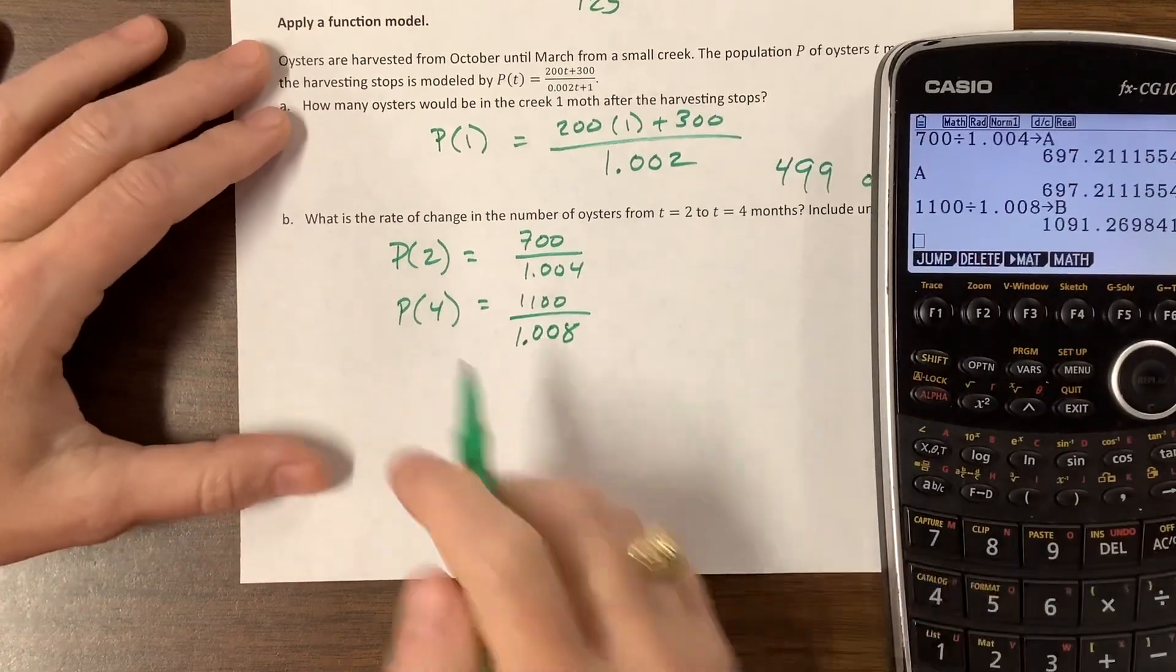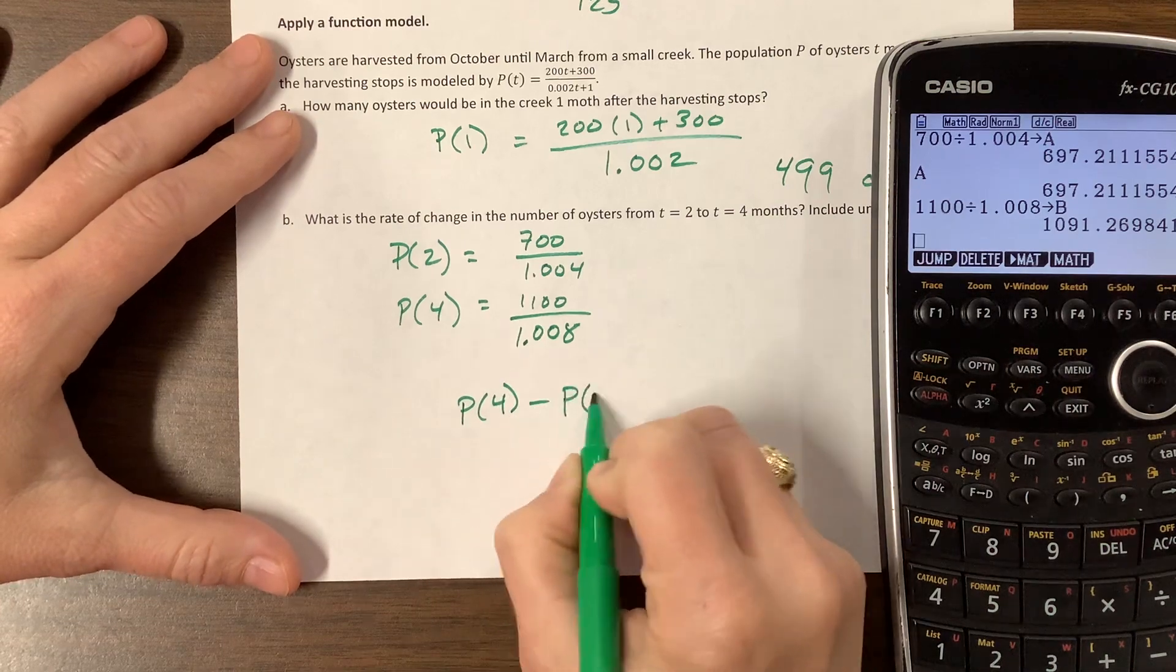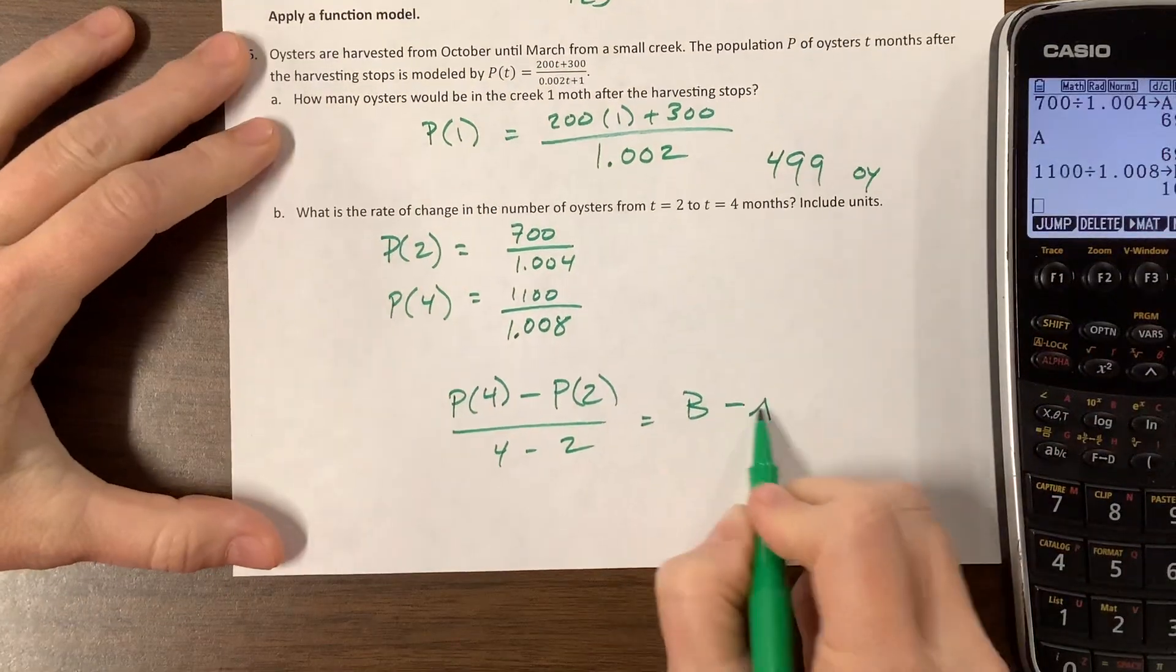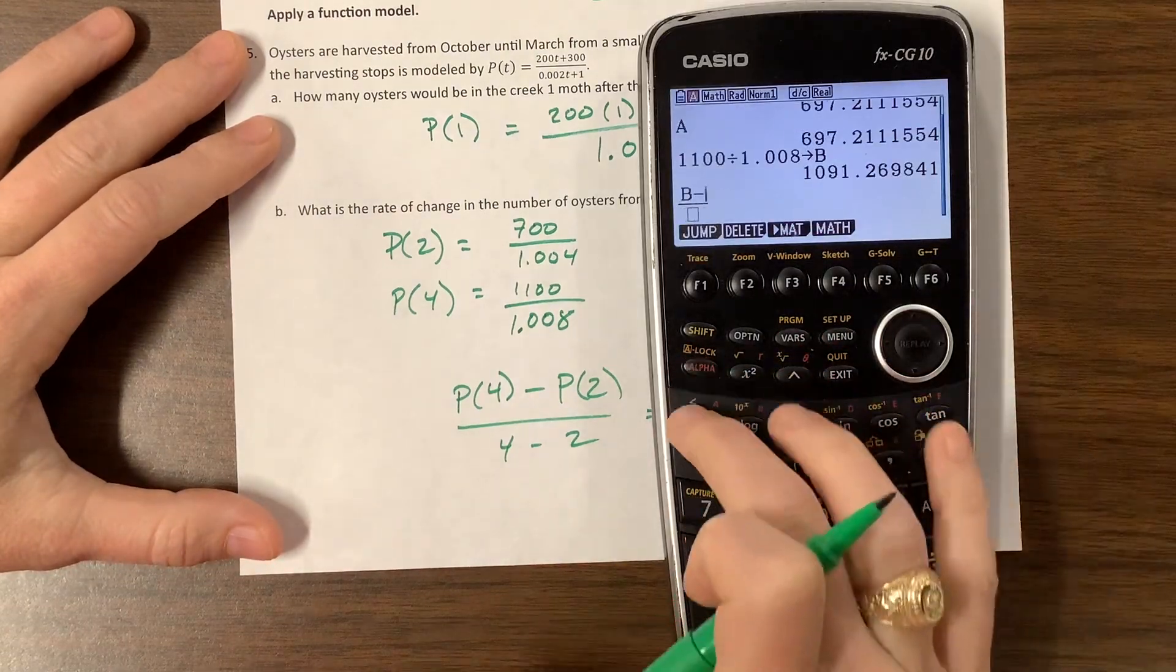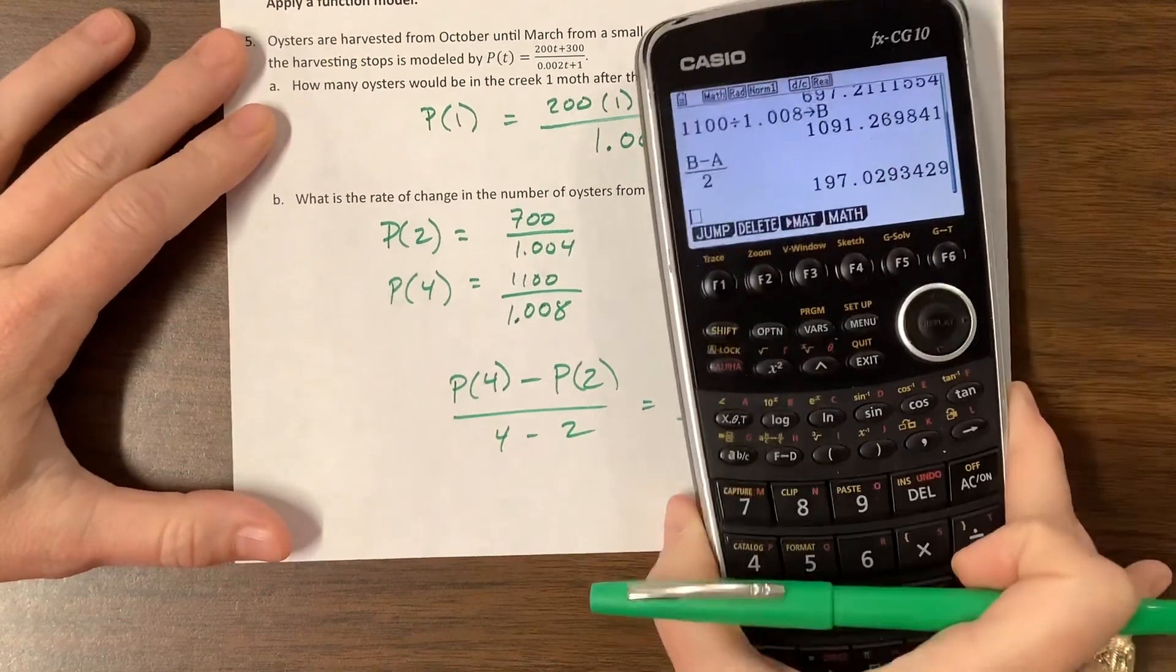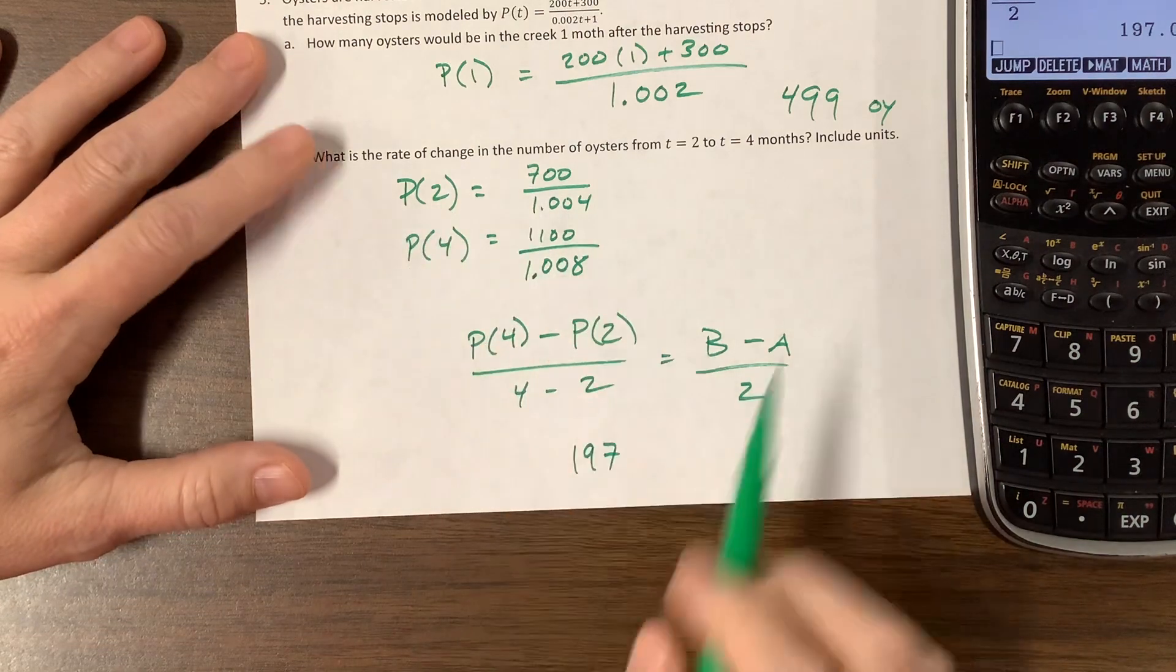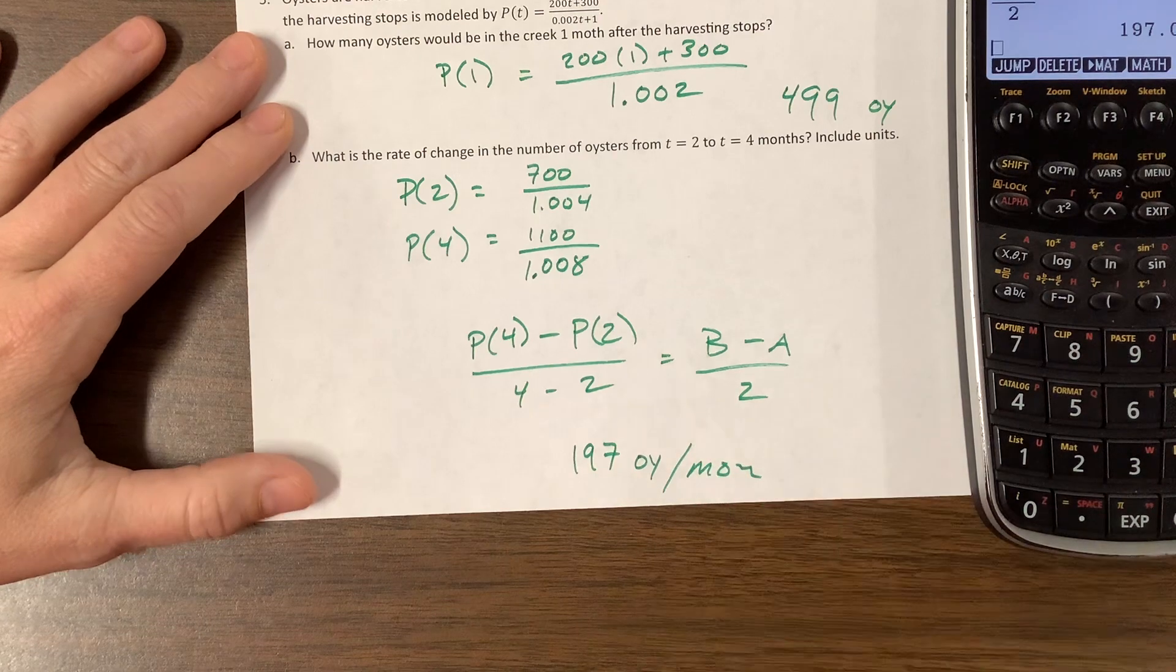Okay. And so to find the rate of change, it's going to be this. Basically it's P of four minus P of two over four minus two. Well, I just stored this guy as B. I just stored that guy as a over two. So I can come here to my calculator and say alpha B minus alpha a over two. And I'm not rounding to the very end. Okay. So this tells us, my rate of change is about 197. 197 what? Well, it's the rate of change in the number of oysters. So it's that 197 oysters per month.